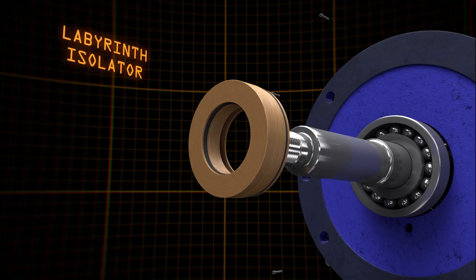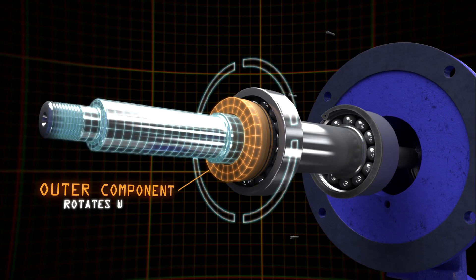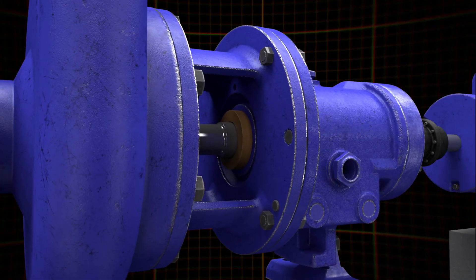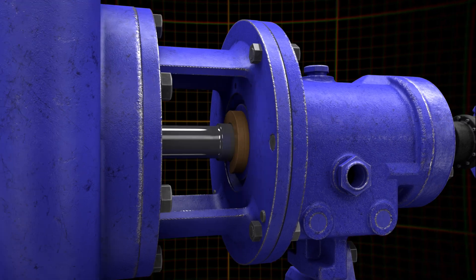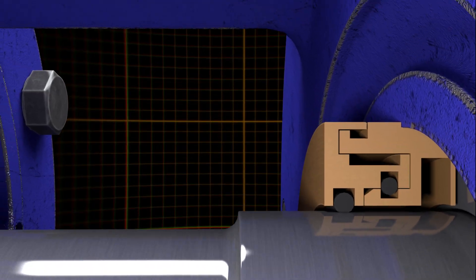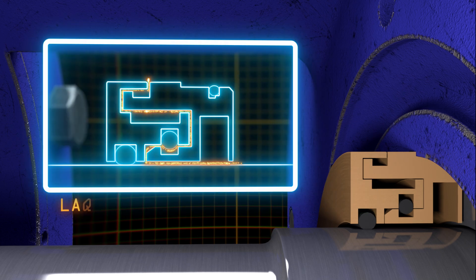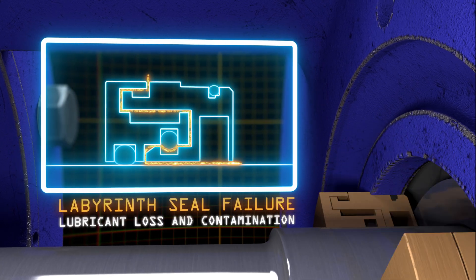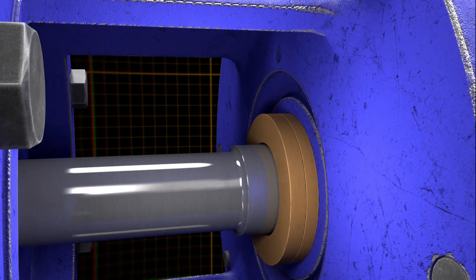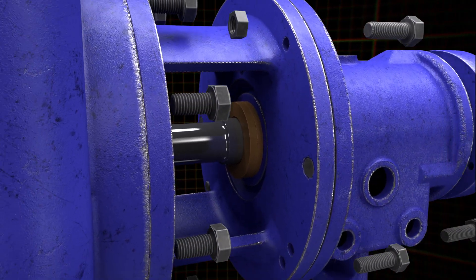Labyrinth isolators added an outer component that rotates with the shaft, solving the shaft wear issue, but replacing the positive seal with a close clearance open path. Since this open path provided a route for contaminants to enter and lubricants to escape, labyrinth seals require frequent and expensive oil changes.